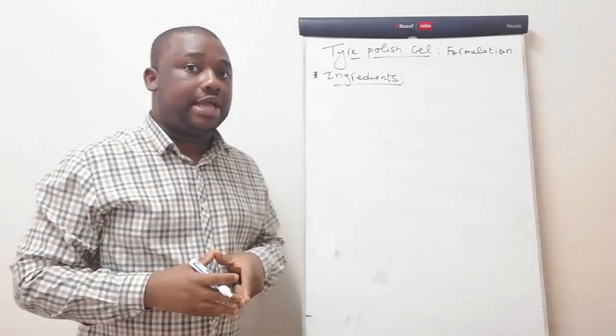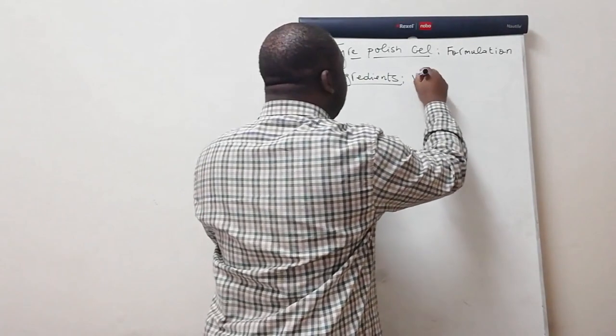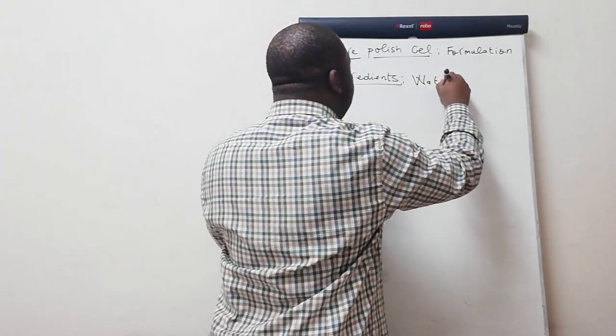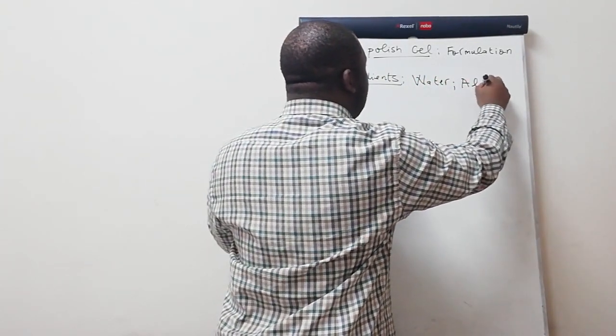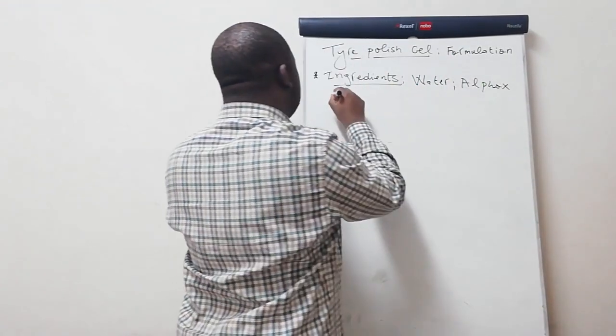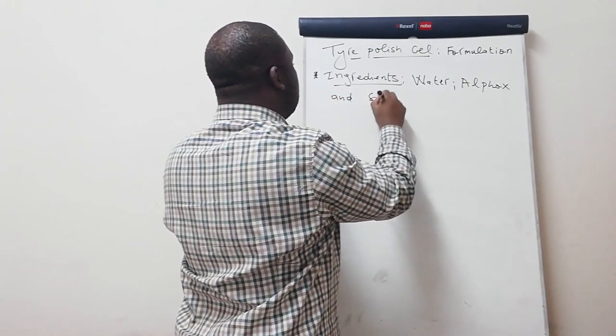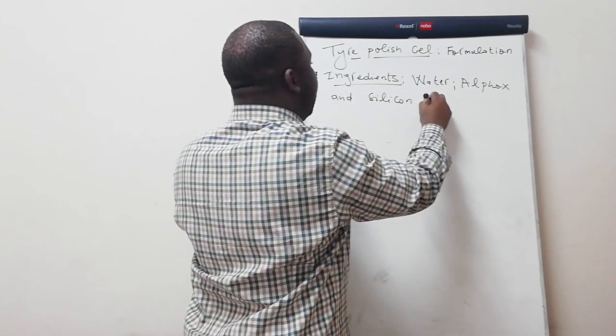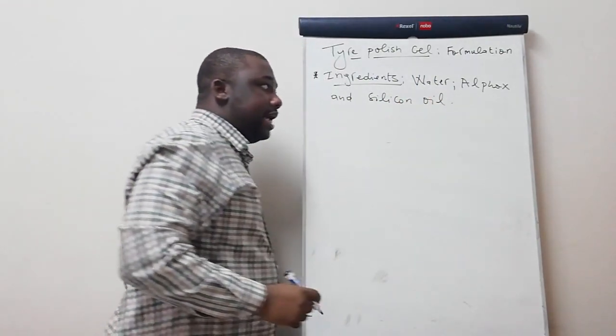Let's write this down, then there are details that I'm explaining. So we do have water, alphox, and silicon oil. These are the ingredients you need to produce the tire polish gel.